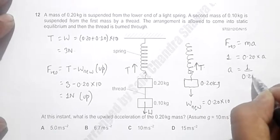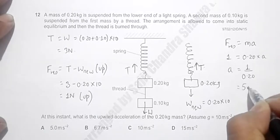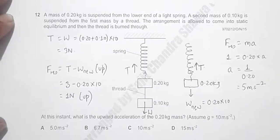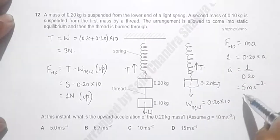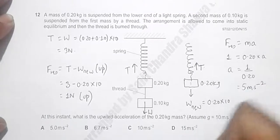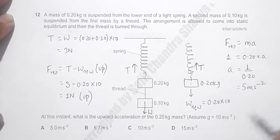So a will be 1 by 0.20 equal to 5 meter per second square. So this mass will accelerate upward at the rate of 5 meter per second square in the very beginning, so the answer choice here is choice A.